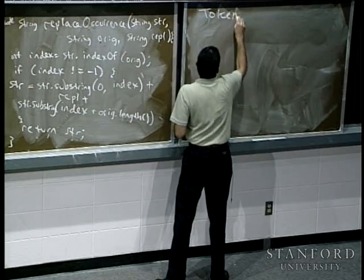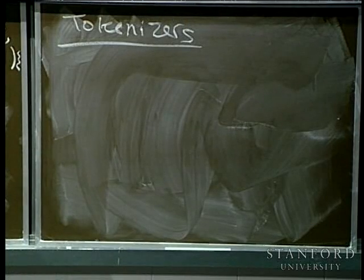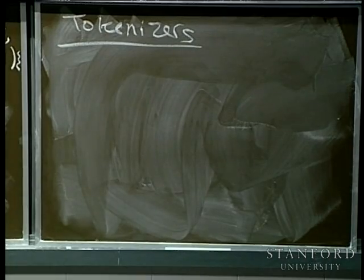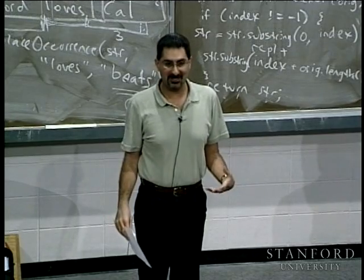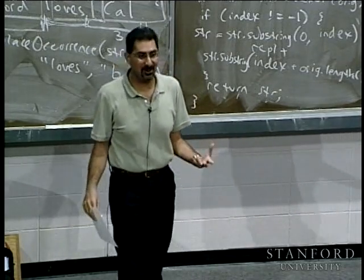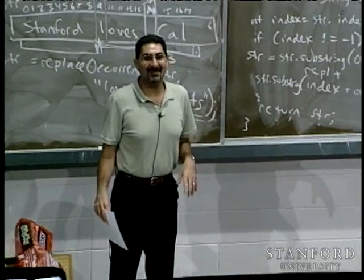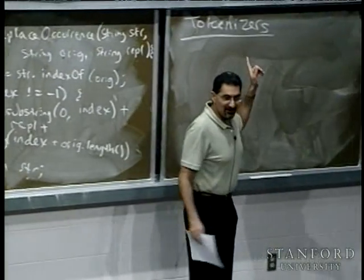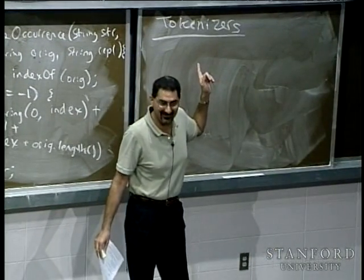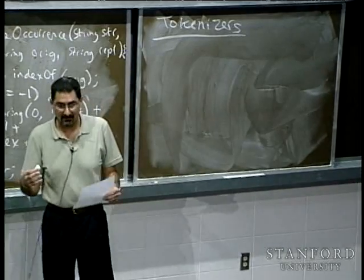Tokenizers. What is a tokenizer? A tokenizer is something that takes a string of text and breaks it up into tokens — that's called tokenization. A token is basically a piece of string delimited by white space. So if I say 'Hello there Mary', hello, there, and Mary are tokens — they are delimited by white space, which means there are spaces or tabs or returns between the individual tokens.